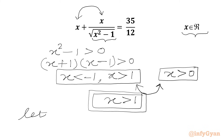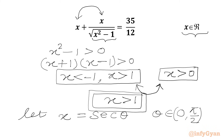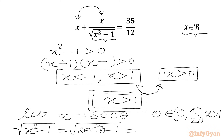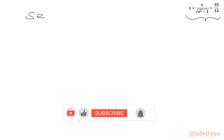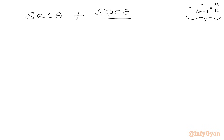Now we will use a trigonometric substitution. Let x = sec θ, where θ belongs to 0 to π/2 (first quadrant) for x > 1. We can then calculate √(x² - 1) = √(sec²θ - 1) = √(tan²θ) = tan θ. So our equation becomes sec θ + sec θ / tan θ = 35/12.